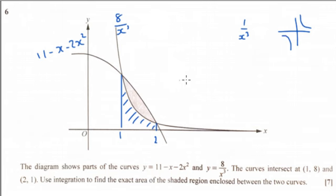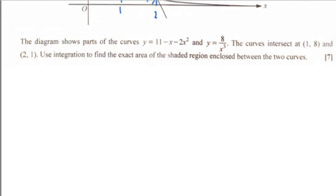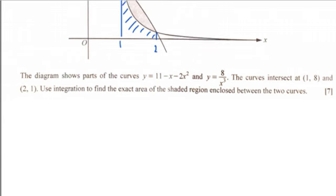gray bit. You can do it as one integral the way I'm going to do it, or you can do it as two separate integrals and take away the 8 over x cubed area from the 11 minus x minus 2x squared area. That's not the method I'm going to use just because I think it's a little